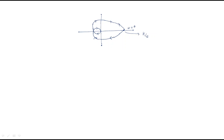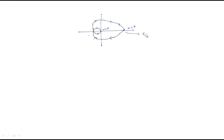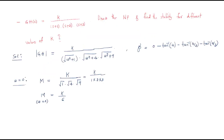The plot goes from ω = 0 to ω = ∞, and its replica is drawn accordingly. We observe that the plot crosses the imaginary axis at some point, but we do not know what ω is at that crossing. At that crossing point the phase is −180°.